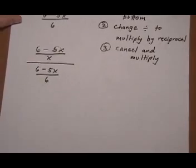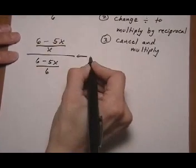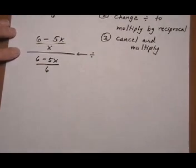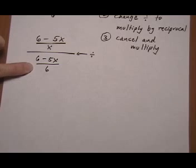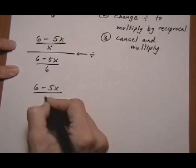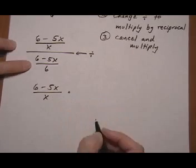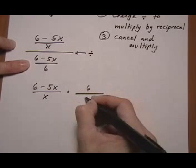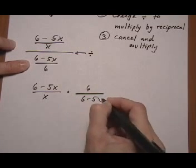Alright, step two. We're going to change this division right here into multiply by the reciprocal of the bottom. So we have the numerator. Six minus five x over x times flip the second one over. Six over six minus five x.